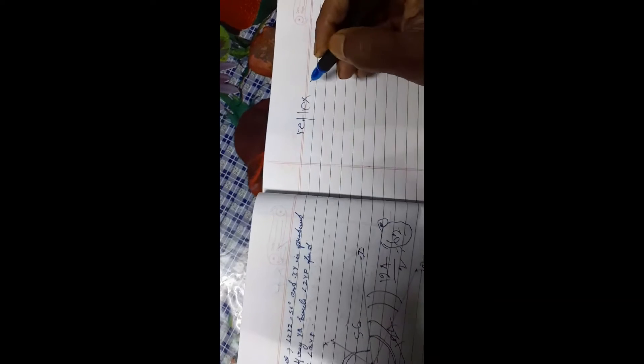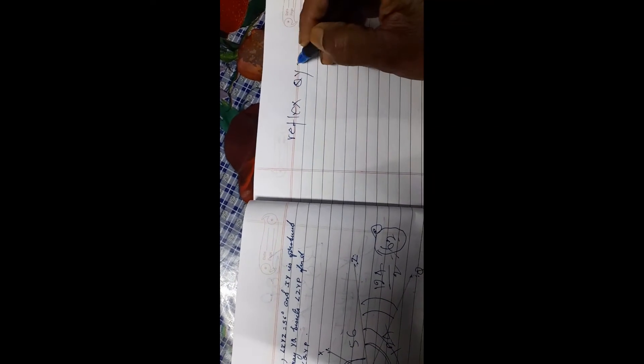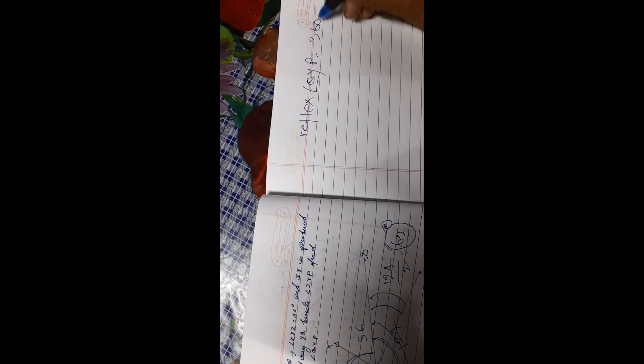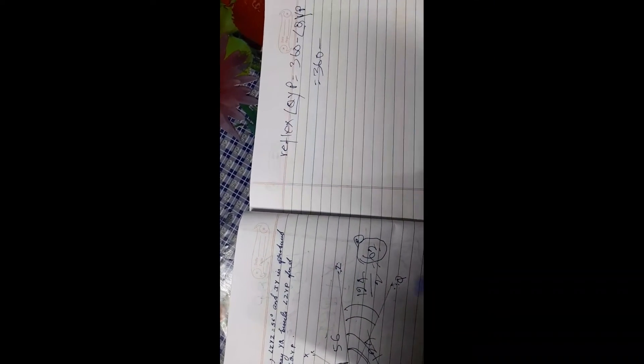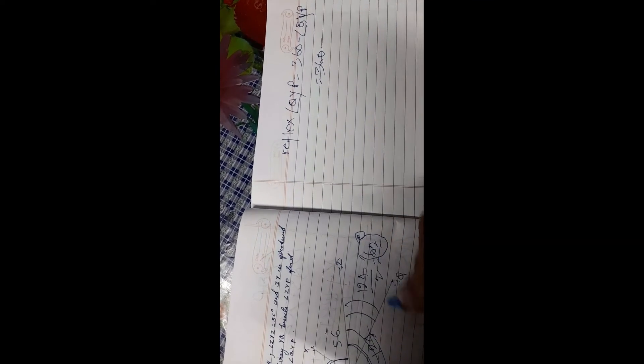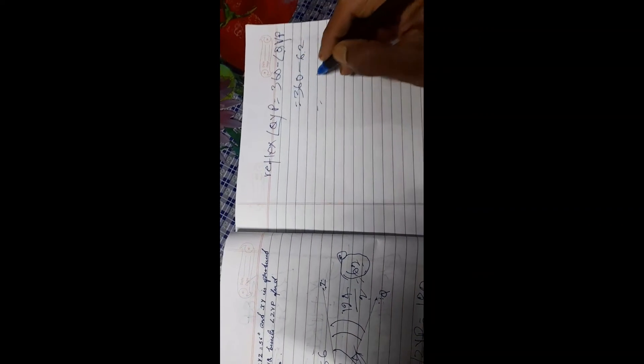Reflex QYP is 360 minus angle QYP. QYP is half of 124, which is 62. So 360 minus 62.